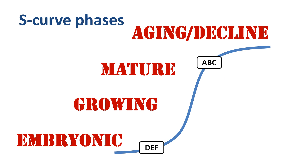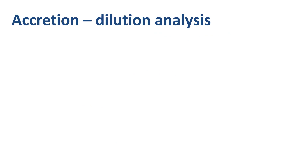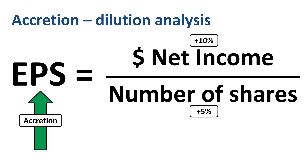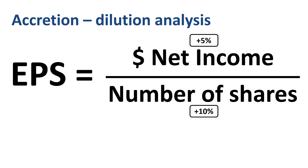Merger and acquisition specialists often build huge financial models for accretion and dilution analysis. EPS is net income divided by the number of shares, and both the numerator as well as the denominator in that equation could move as a result of doing a deal. If the acquiring company issues new shares to finance the acquisition, increasing the share count by 5%, but in return is expected to increase its net income by 10%, then the deal is labeled accretive. If the share count increases by 10% and net income by just 5%, then the deal is labeled dilutive as it decreases EPS.